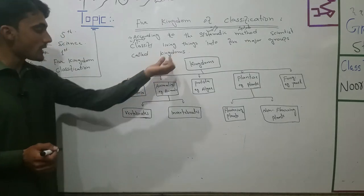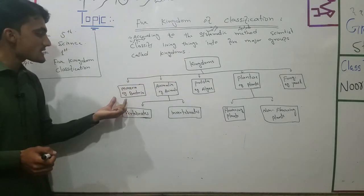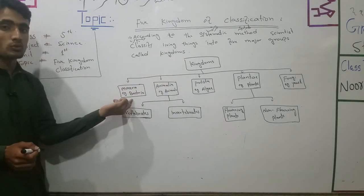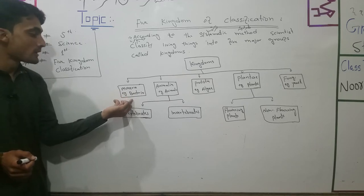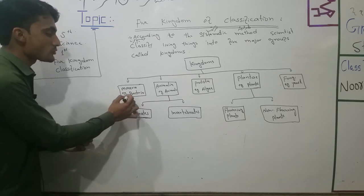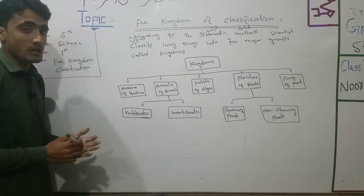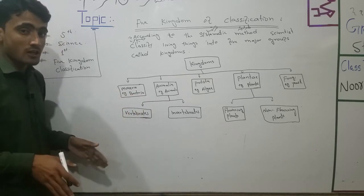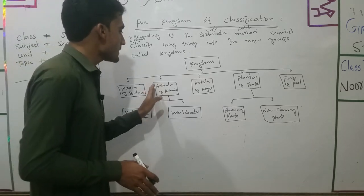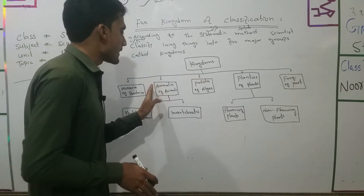The first kingdom is Monera. For example, bacteria belong to kingdom Monera. The next kingdom is Animalia.